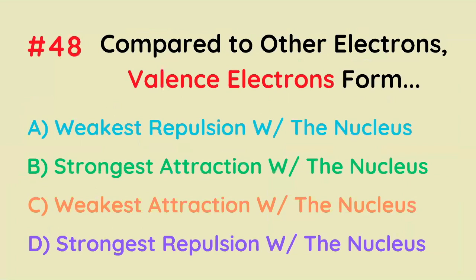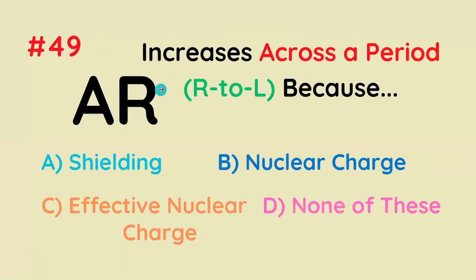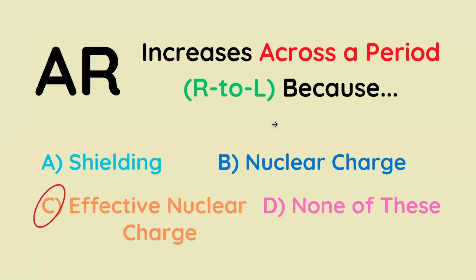Compared to other electrons, valence electrons form what connection with the nucleus? It's going to be the weakest attraction with the nucleus. Atomic radius increases across a period right to left because of what? It's effective nuclear charge.